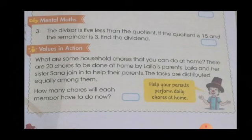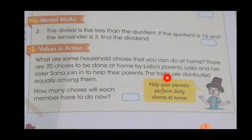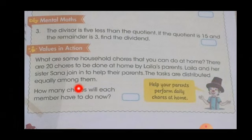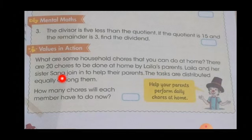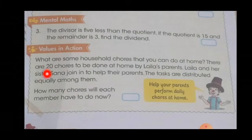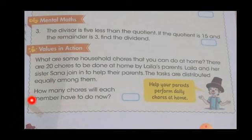Now move to Values in Action. There are 20 household chores to be done at home by Laila's parents. Laila and her sister join in to help their parents. How many chores will each member have to do if the tasks are equally divided? There are basically 4 people completing these tasks. The total tasks are 20, so we will divide 20 by 4 to find how many tasks each member has to do.